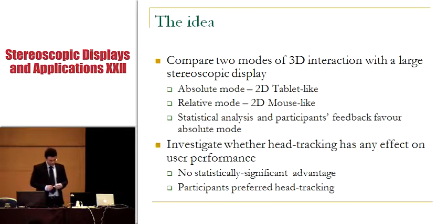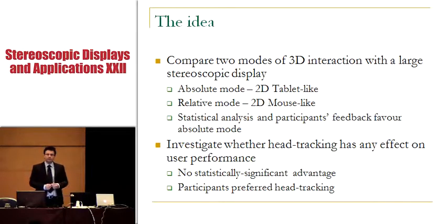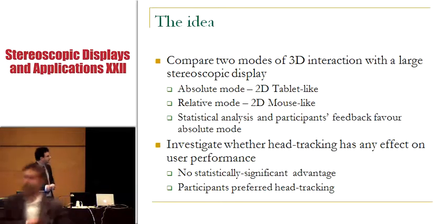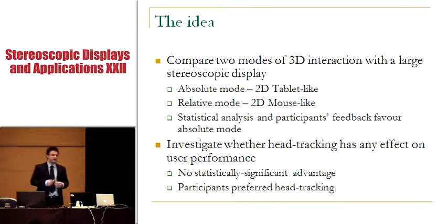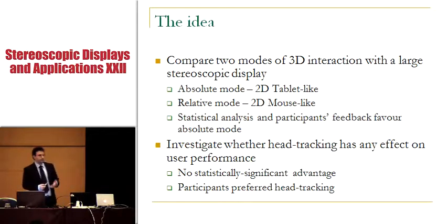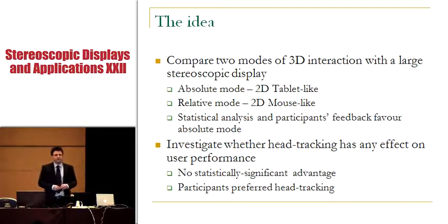In absolute mode, the position of the physical pointer exactly maps to the position of the virtual pointer inside the display volume. This is analogous to a 2D graphics tablet. In relative mode, the motion of the physical pointer corresponds to motion of the virtual pointer inside the display volume. However, their absolute positions do not correspond. This is analogous to a 2D mouse, where there is no direct correspondence between the position of the mouse and the position of the pointer inside the 2D screen.